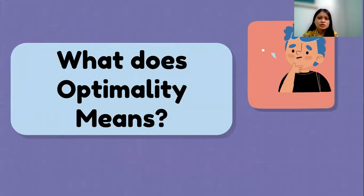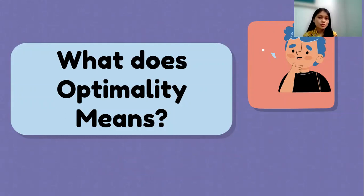So back to the first question: what does optimality mean? Before I explain further, I have a question. Have you ever heard about a slip of tongue? I'm sure you have, or maybe it has happened to us. Today I will not explain from the chronological rules or structure itself, but I will explain from the optimality theory perspective.